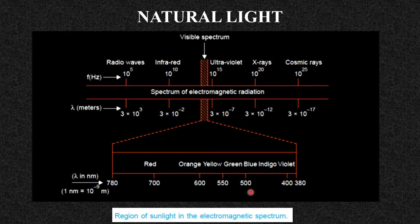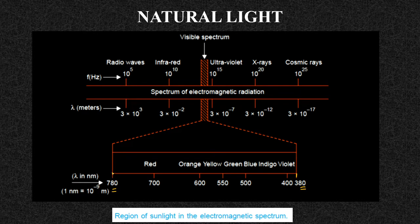Whenever we talk about the visible spectrum, these frequencies are in the terahertz range. In terms of wavelength, this range varies from 380 nanometers to 780 nanometers. The visible spectrum starts with violet color and ends at the red color. This range goes from 380 nanometers to 780 nanometers, and somewhere around 550 nanometers we observe green color.